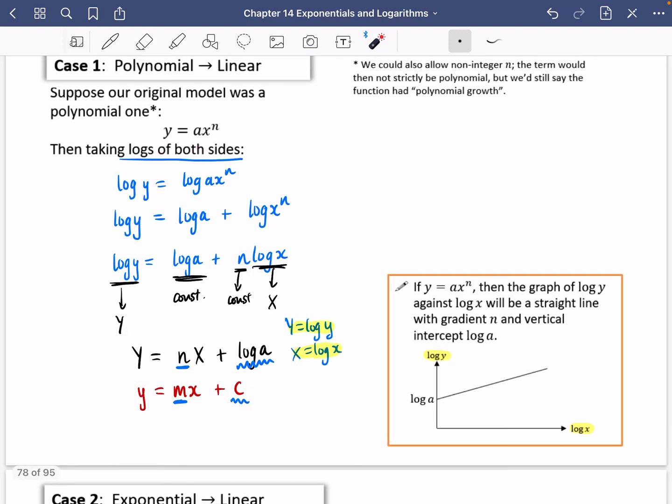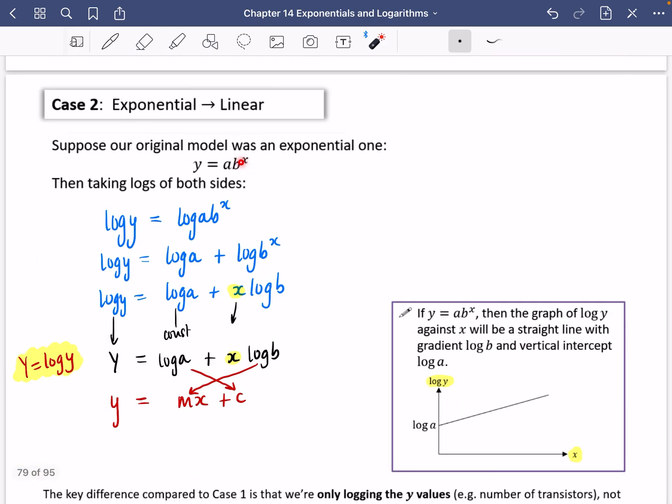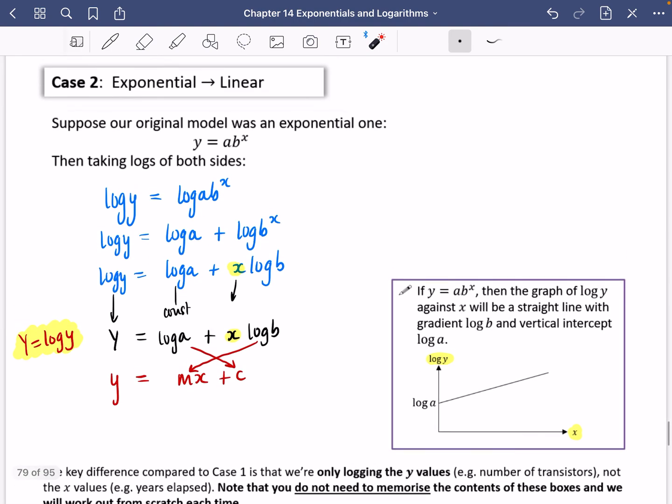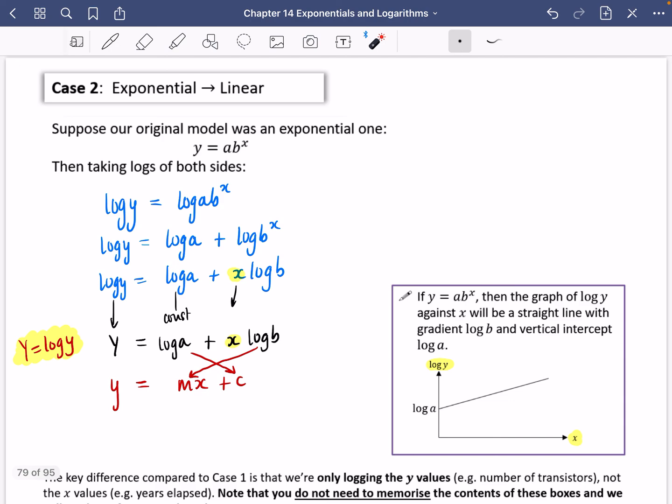All you need to know is you just take logs of both sides, apply your log laws and it turns it into a straight line kind of graph. So in the next video, I'm going to do four different examples, including some exam questions that show you exactly how these things work.